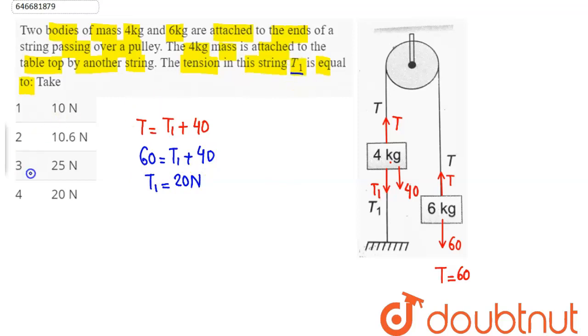Hence, the tension in the string T1 is equal to 20 newtons which is option number 4. Therefore, option 4 is the correct answer.